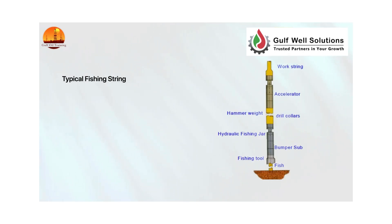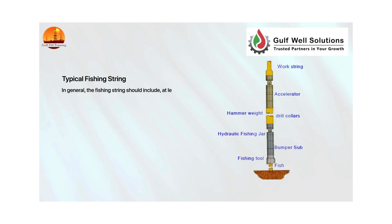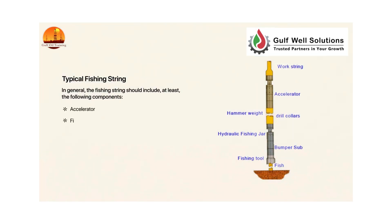Typical fishing string. In general, the fishing string should include at least the following components: accelerator, fishing jar, bumper sub, safety joint, and fishing tool.